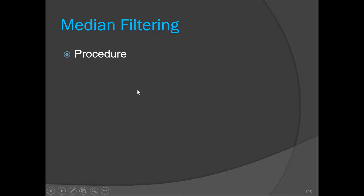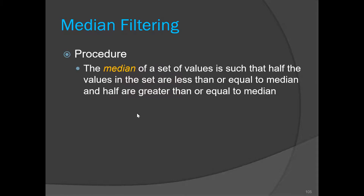The median filter is very effective to reduce salt-and-pepper noise. The procedure is: since these are nonlinear filters, first we do the ordering. The median of a set of values is such that half the values in the set are less than or equal to the median and half are greater than or equal to the median. To find a median, we sort the values present in the set and the middle element will be considered as the median if there are an odd number of elements. If there are an even number of elements, we take the average of the middle two elements.